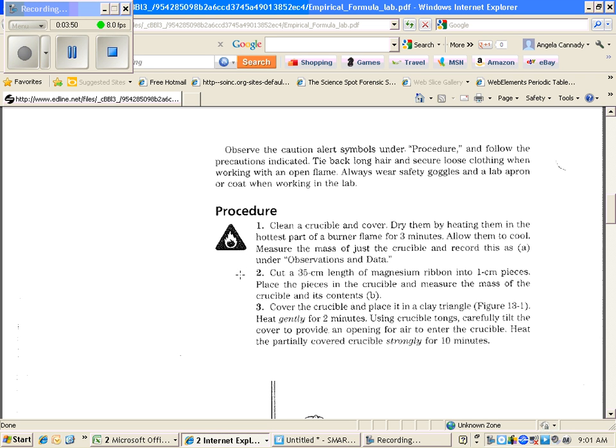You're going to get a 35-centimeter length of magnesium ribbon. You're going to cut it up into one-centimeter pieces. It doesn't have to be exactly one centimeter. You can just chop it into little pieces so it fits into the crucible. Then you're going to measure the mass of the crucible and the contents, the magnesium ribbon.